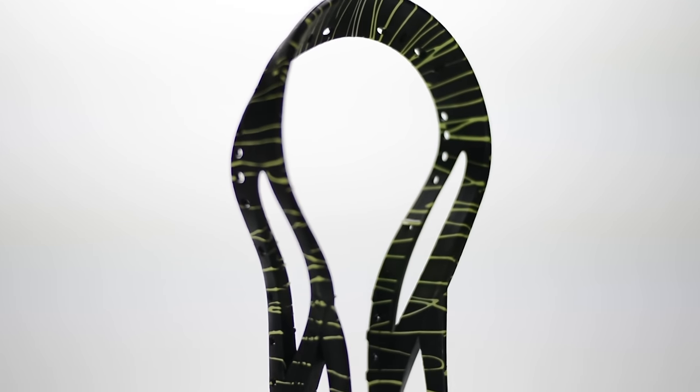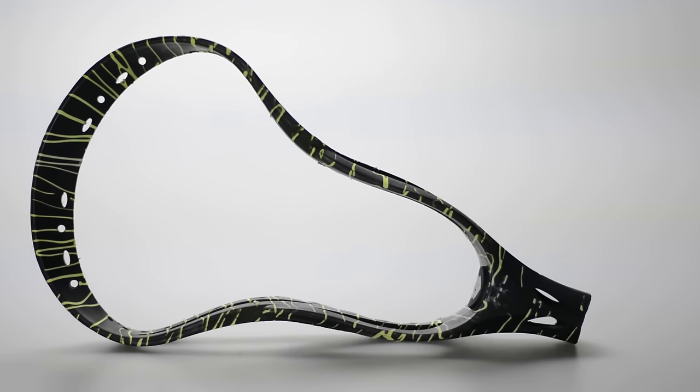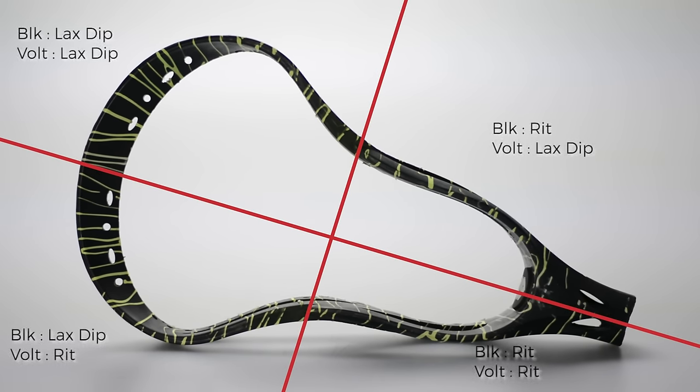The most important part of any experiment is control. So basically what we did is we had to section off this head in a certain manner to show the differences of the Rit dye and the Lax Dip.